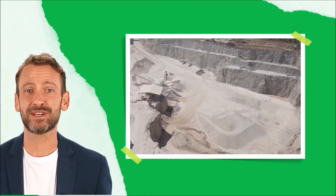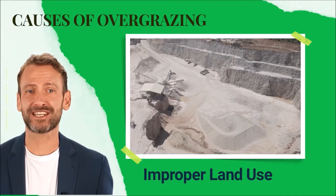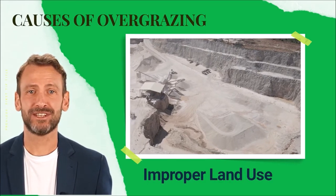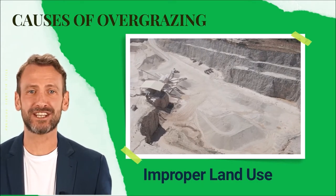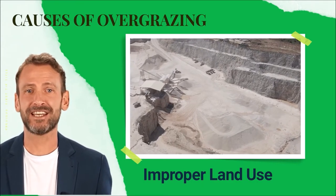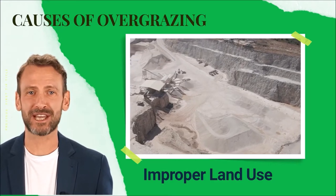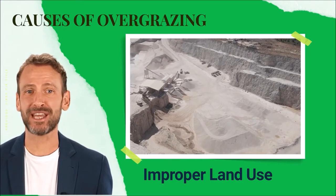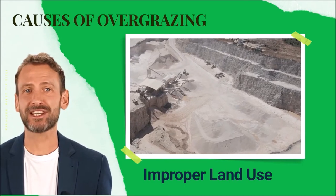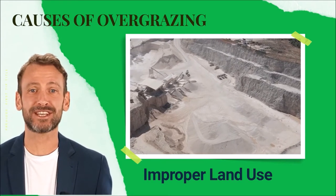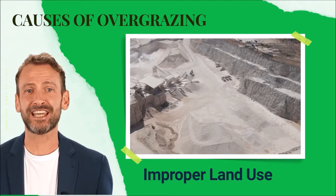Improper land use — certain human activities can contribute to overgrazing. For example, land clearing techniques such as slash and burn can deplete vegetation cover. Mining activities not only pollute the environment, but also degrade the soil. Areas where mining is taking place often have minimal or no vegetation cover. Logging activities can also damage vegetation cover, leaving animals with nothing to eat.